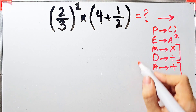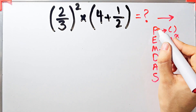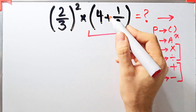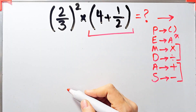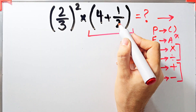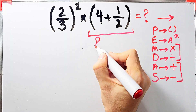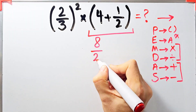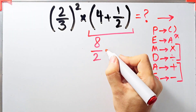First we simplify the parentheses. Inside the parentheses we have four plus one over two. Since the denominator of this fraction is two, we can write four as eight over two. Now we have eight over two plus one over two.